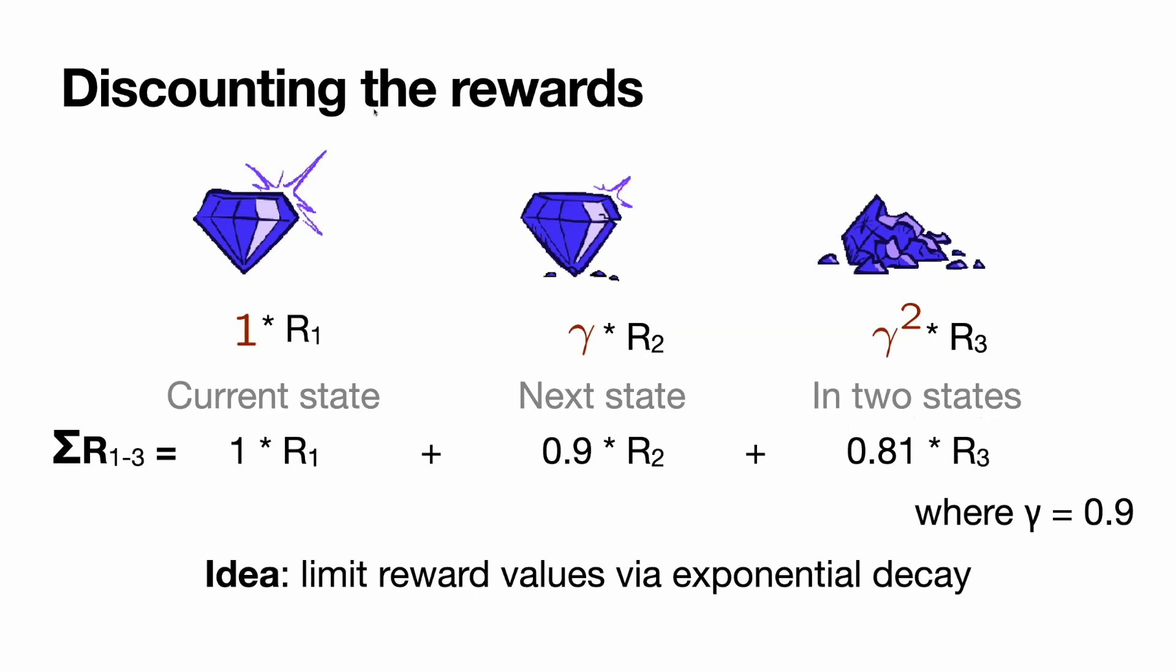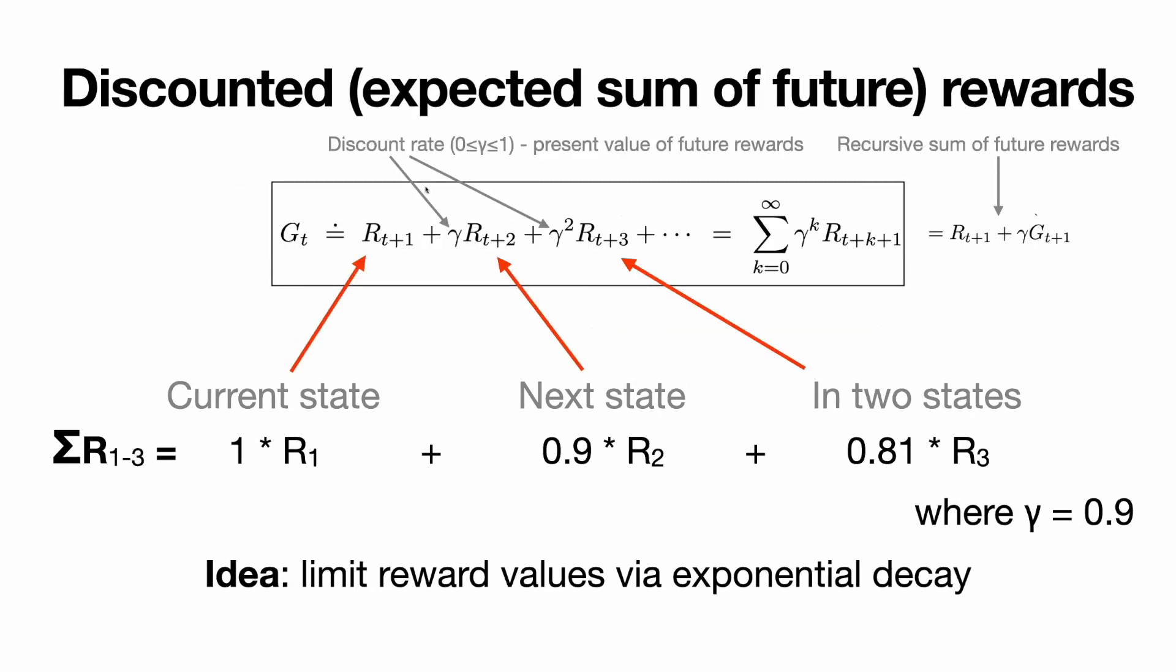Again, the idea of discounting is limiting reward values through exponential decay, and gamma is exactly that, 2 for exponential decay. Now, let's get back to continuous reward. It was the formula for continuous reward. I just depicted for clarity where is the reward for current state. Here is the reward for future state. Here is the reward in two states.